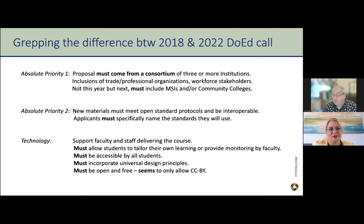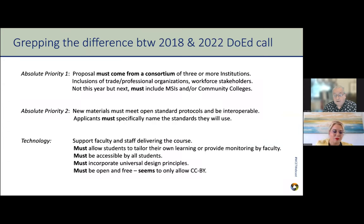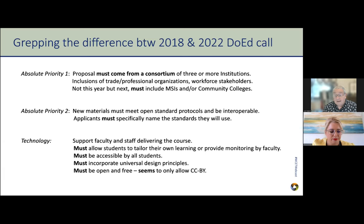Technology is a really important area. One of the things that stuck out to me is they specifically said in this call that any technology must support faculty and staff delivering the course. And then it must allow students to tailor their own learning or provide monitoring by faculty — there's a lot of room for interpretation there. Accessibility is a must, driven by universal design. They say it must be open and free, and the only thing you can ask is to be acknowledged for creating the material. This raises the question: does this mean you can't have NC materials under Creative Commons? Does this mean you can't have ND materials?